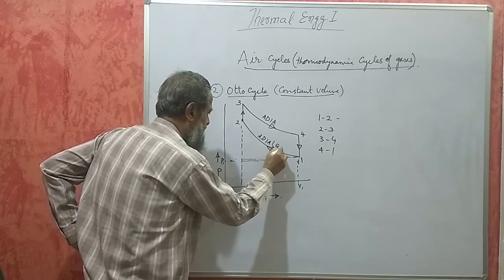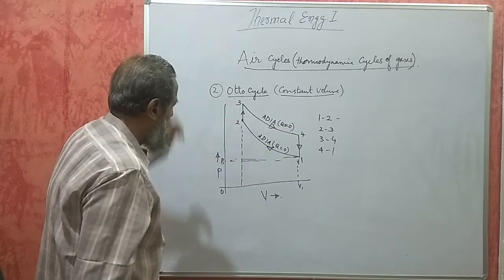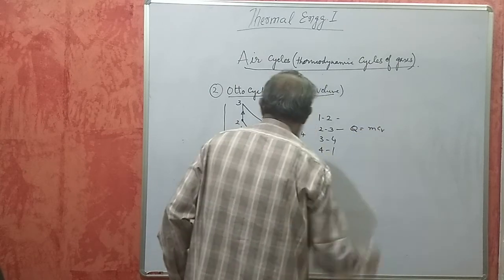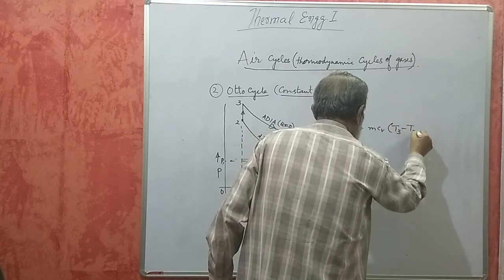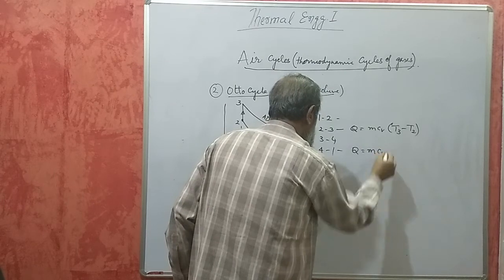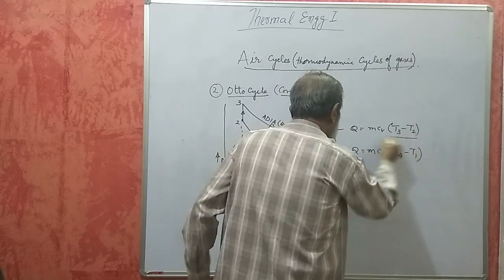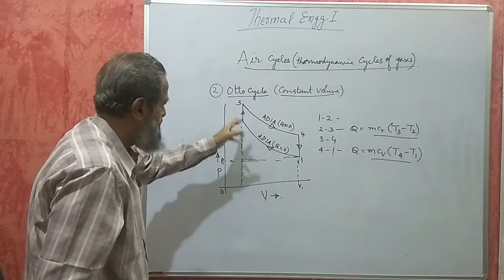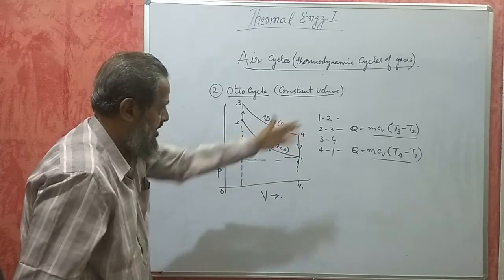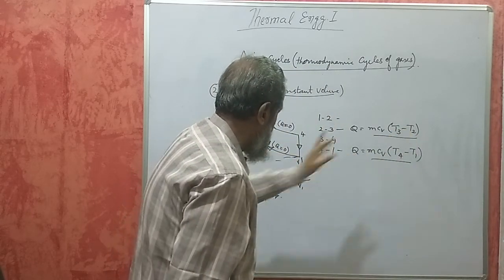No heat is absorbed or rejected in the adiabatic processes (Q = 0 for 1-2 and 3-4). Heat is supplied during the constant volume process 2-3: Q₂₃ = mCᵥ(T3 − T2). Heat is rejected during process 4-1: Q₄₁ = mCᵥ(T4 − T1). Since work done is zero in constant volume processes, heat absorbed or rejected equals the change in internal energy, given by mass × Cᵥ × temperature difference.